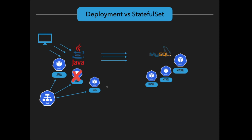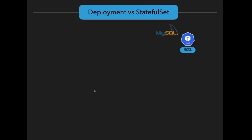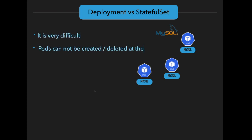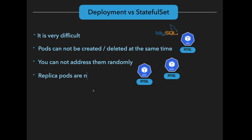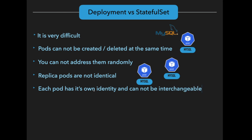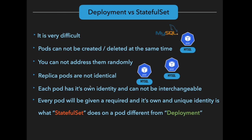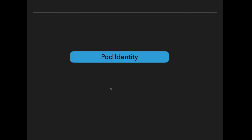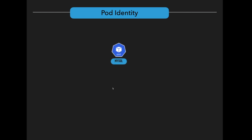If we want to delete any pod of the Java application, it can be randomly chosen and deleted. In contrast, replication and scaling of StatefulSet applications is not straightforward — it is very difficult because the pods are not identical and cannot be interchangeable. We cannot create or delete pods randomly for a StatefulSet application. Each replica pod has its own identity and cannot be interchanged. StatefulSet assigns a required unique identity to each pod — different from the deployment component — and maintains a sticky pod identity that is immutable and cannot be changed.